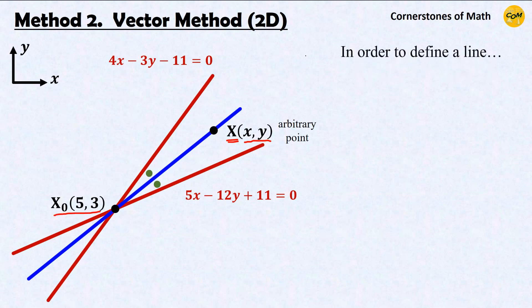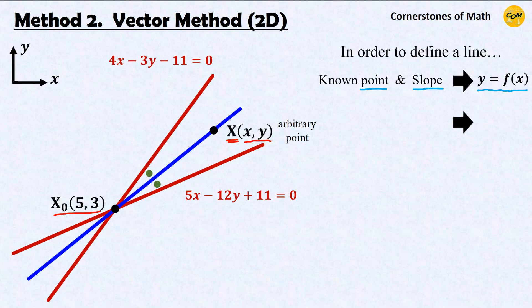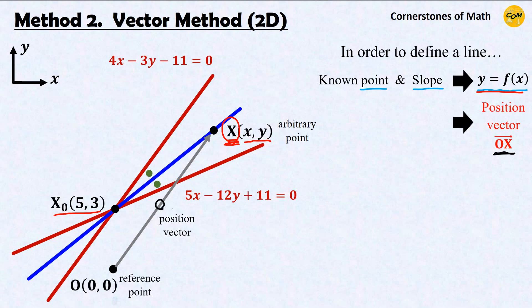In order to understand this vector method, first we need to think about what we need in order to uniquely define a line. You might have learned in your basic coordinate geometry course that in order to uniquely define a line, you have to know at least one point that the line passes through and the slope of the line. If you know these two, you can find the equation of the line. In the vector equivalent, finding the equation of the line means finding the expression for this point x. Point x can be written in vector form as the position vector Ox, where O is the origin, which works as a reference point for our position vector.